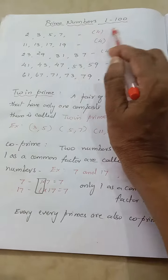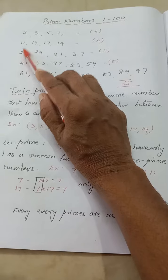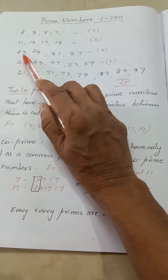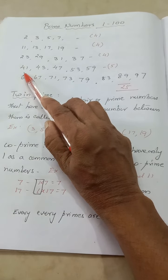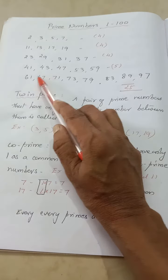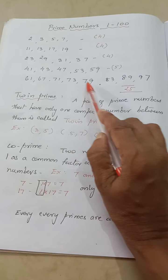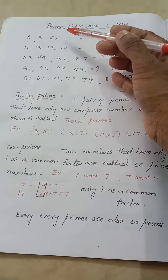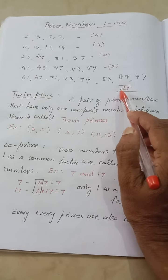5 and 7 — so totally four numbers from 1 to 10. Then 11, 13, 17, and 19 — that is also four numbers. Then 23, 29, 31, 37, 41, 43, 47, 53, 59, then 61, 67, 71, 73, 79, 83, 89, and 97. So totally from 1 to 100 there are 25 prime numbers.